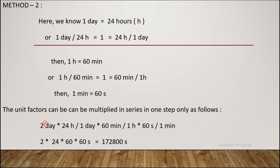We start with 2 days × (24 hours / 1 day) × (60 minutes / 1 hour) × (60 seconds / 1 minute). Day cancels with day, hour cancels with hour, minute cancels with minute — leaving only seconds. Numerically: 2 × 24 × 60 × 60 = 172,800 seconds.